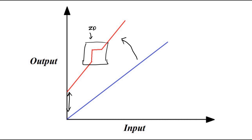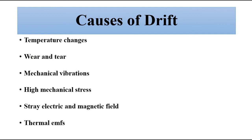The next question is: why does drift occur? What are the causes of drift in a measuring system? There are various reasons: changes in environmental conditions such as temperature and pressure, wear and tear from prolonged use, mechanical vibrations, high mechanical stress from long-term use, aging of components, stray electric and magnetic fields when electrical or electronic systems are used, and thermal EMFs.